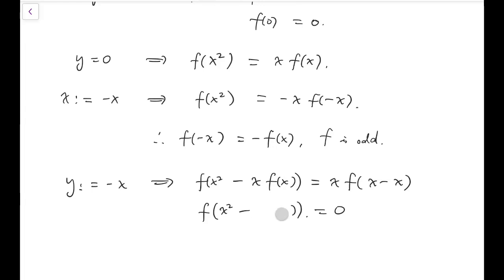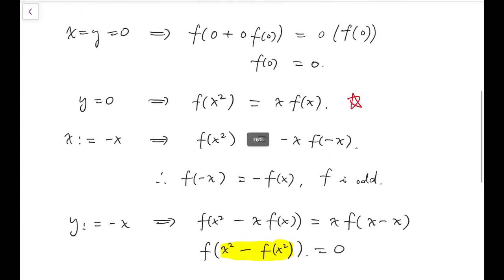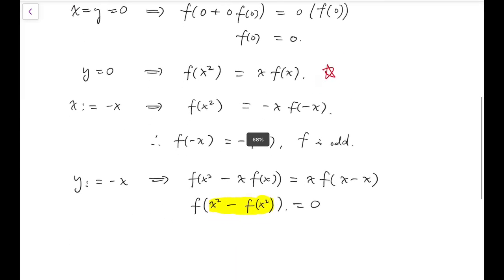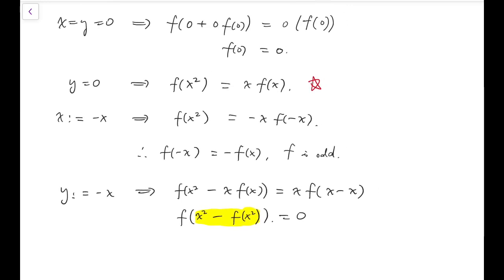Or I can rewrite this as f of x squared minus f of x squared. If this x squared minus f of x squared is non-zero, then we have two numbers being equal to zero. And it's actually quite reasonable for us to guess that the constant function f always equal to zero could be a solution. And in fact it works.